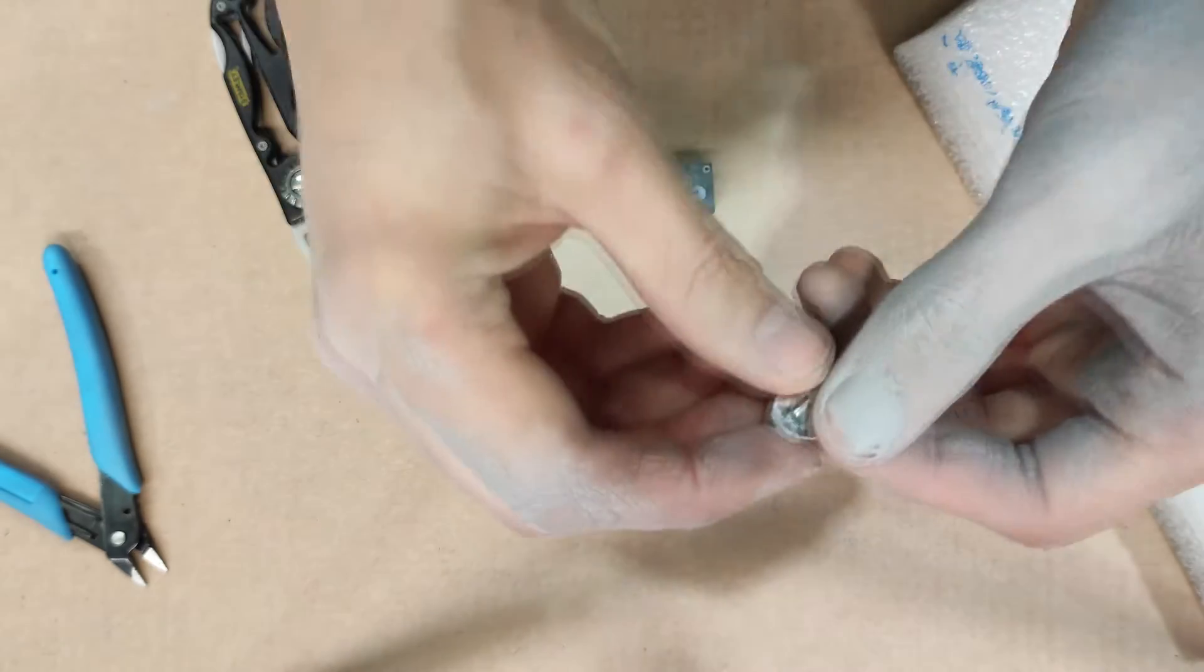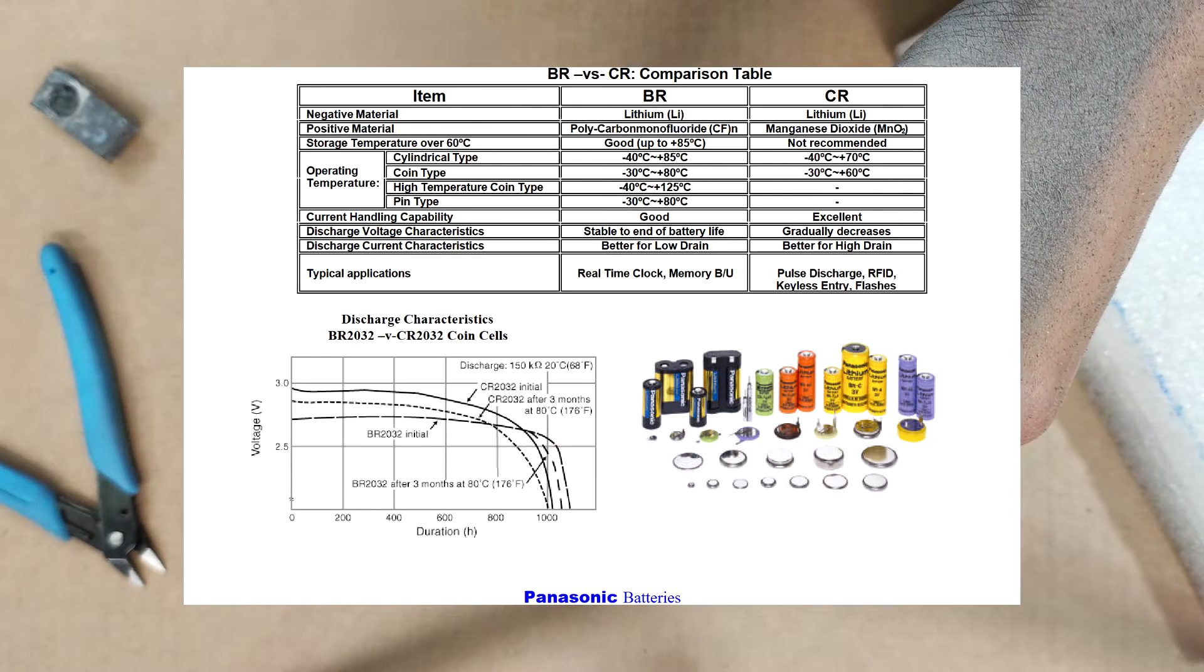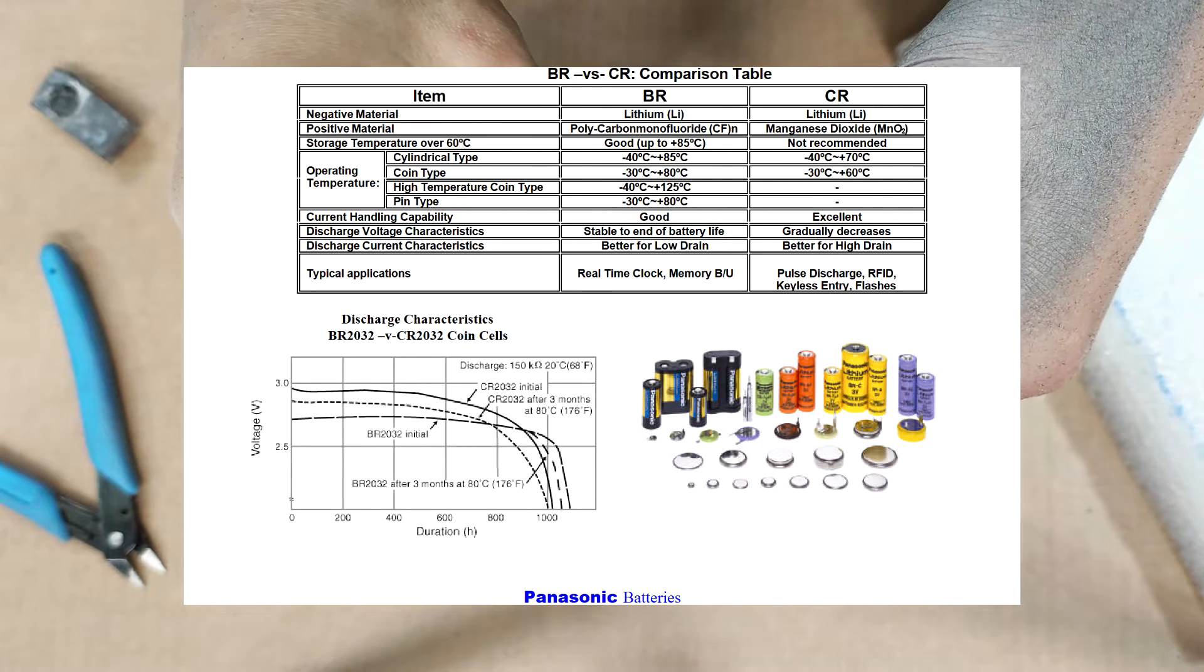The battery is made by Panasonic and is marked BR1225. These BR batteries are similar to the more common CR variants, but have a different chemistry.